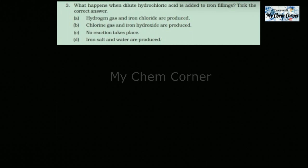Option A: Hydrogen gas and iron chloride are produced. Option B: Chlorine gas and iron hydroxide are produced. Option C: No reaction takes place. Option D: Iron salt and water are produced. The question is very clear - all that you need to know is what happens when you take iron and treat it with dilute HCl.